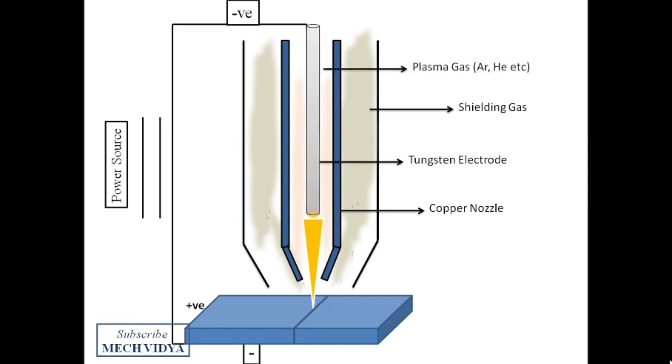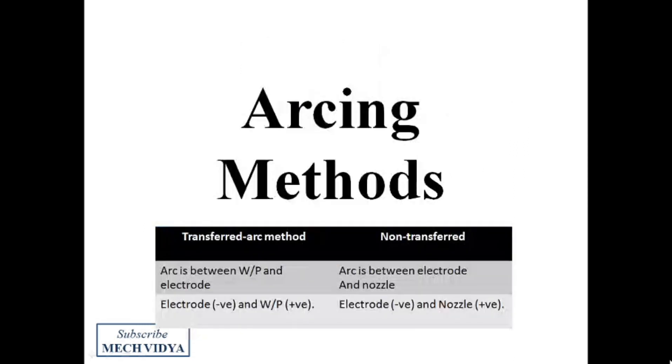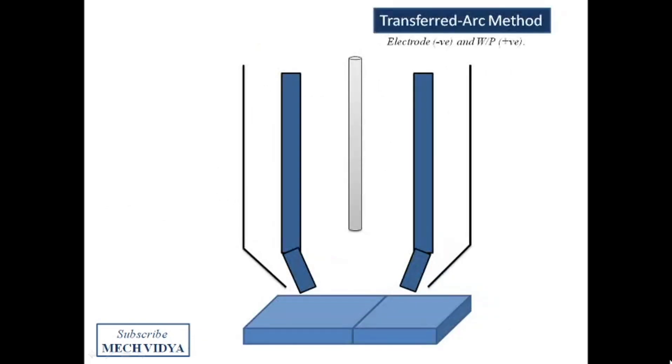Now one more thing that is there. We have two ways by which we can initiate the arc. The transferred arc method and the non-transferred arc method. In transferred arc method, the electrode is connected to the negative terminal of the battery, whereas the workpiece is connected to the positive terminal. Thus, the arc initiates in between the electrode and the workpiece and we get a steady ionized plasma channel.